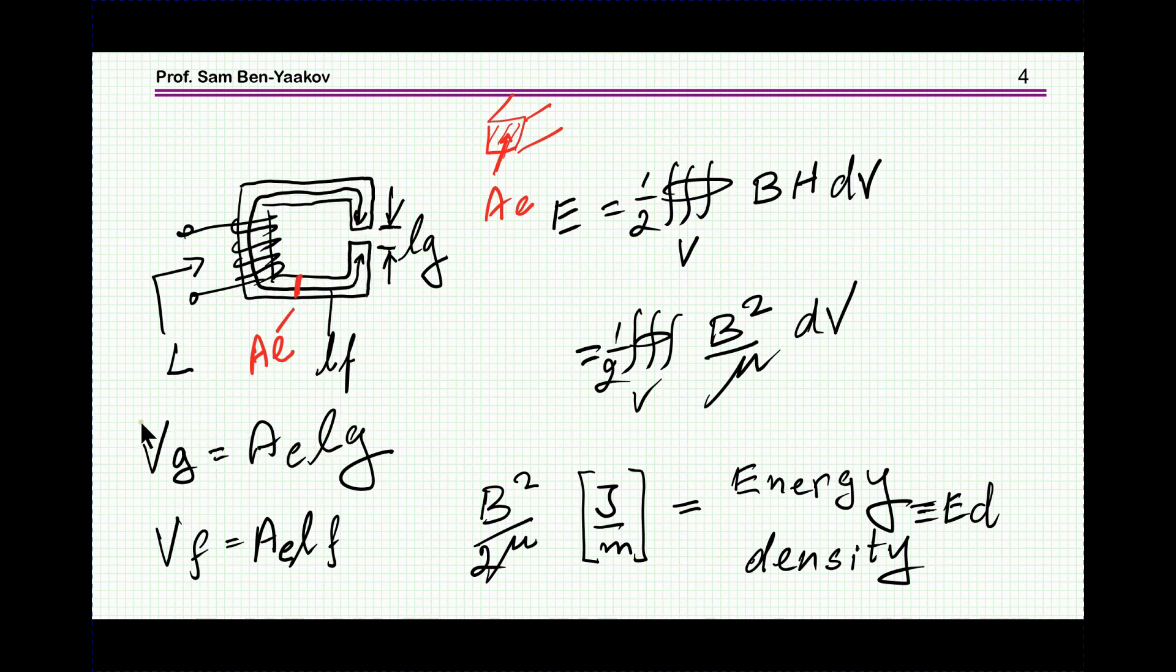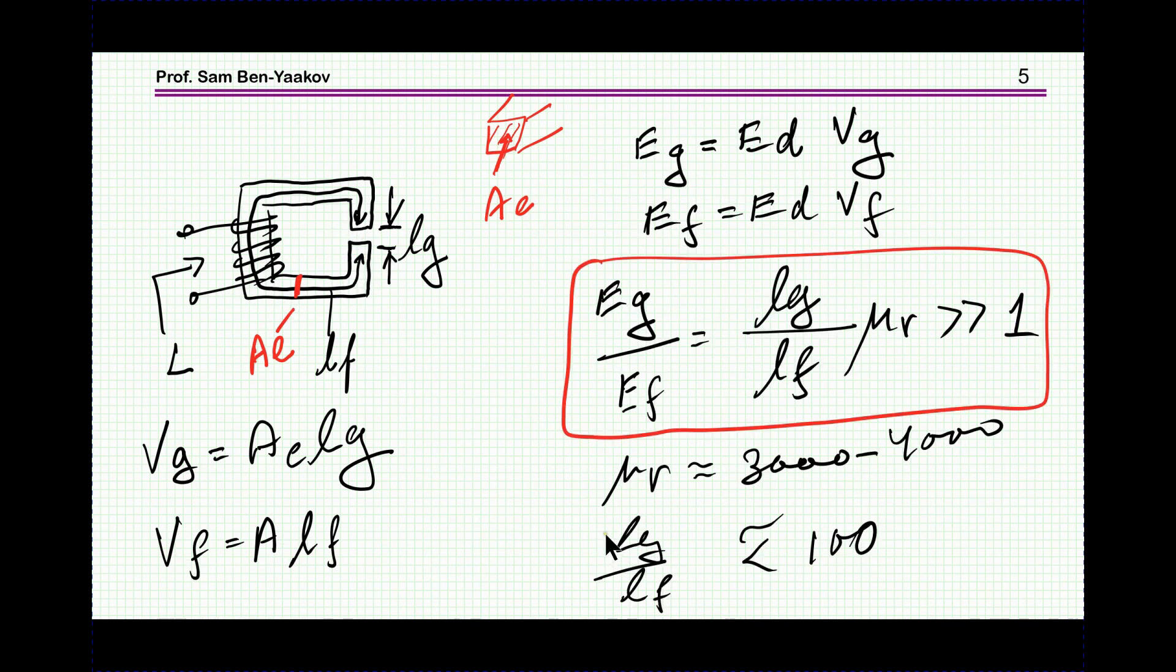The volume for the magnetic part is AE which is the cross-section area of the core times the length—this is the volume of the ferrite. The volume within the gap is AB times the length of the gap.